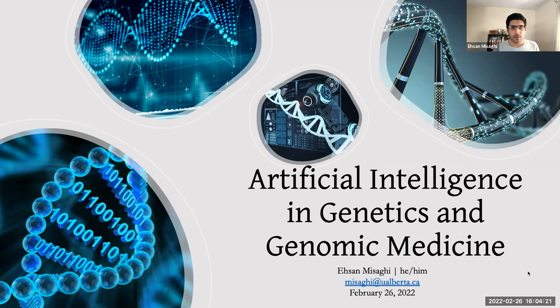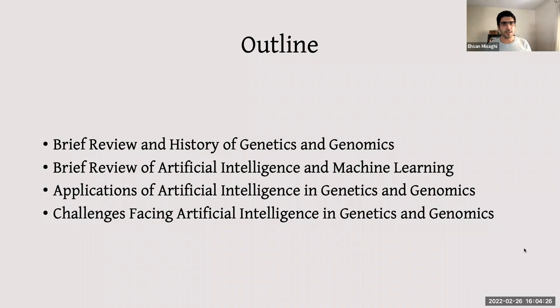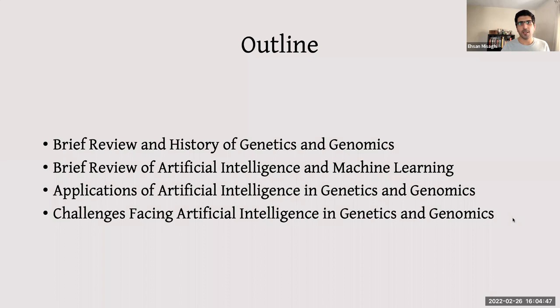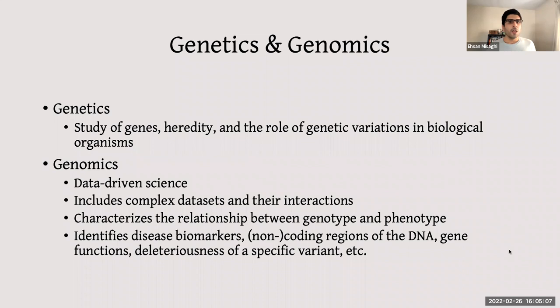There's a lot to get through today, so I'll try to be concise. We'll have a brief review of the history of genetics and genomics, talk about AI and machine learning in general, and then cover the applications of artificial intelligence in genetics and genomics, followed by some of the challenges facing the field.